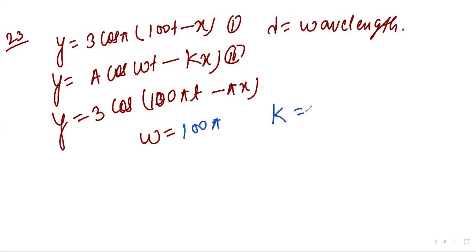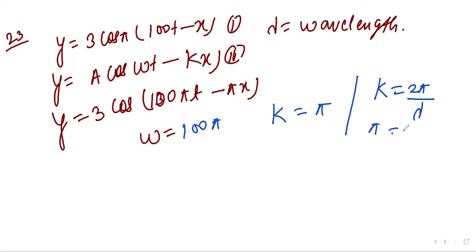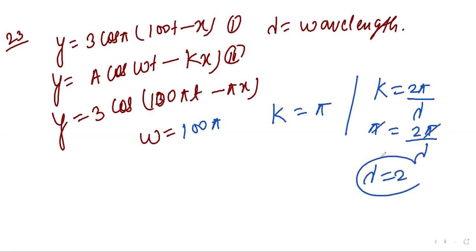Using the relation k = 2π/λ, put k = π: π = 2π/λ, so π cancels and λ = 2 meters. This question was asked in 1997.